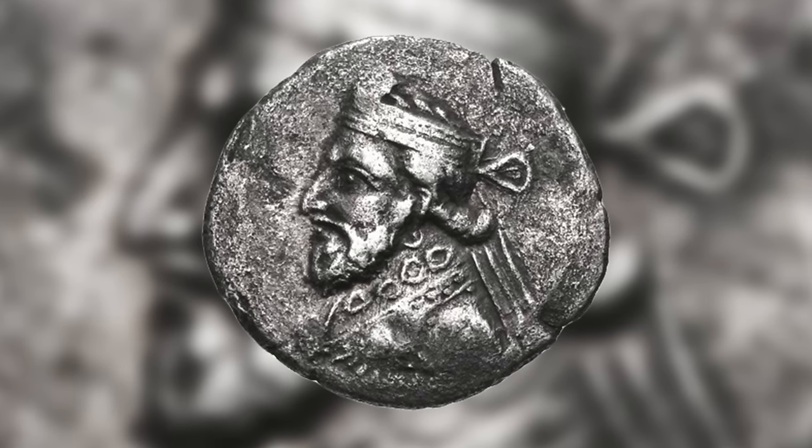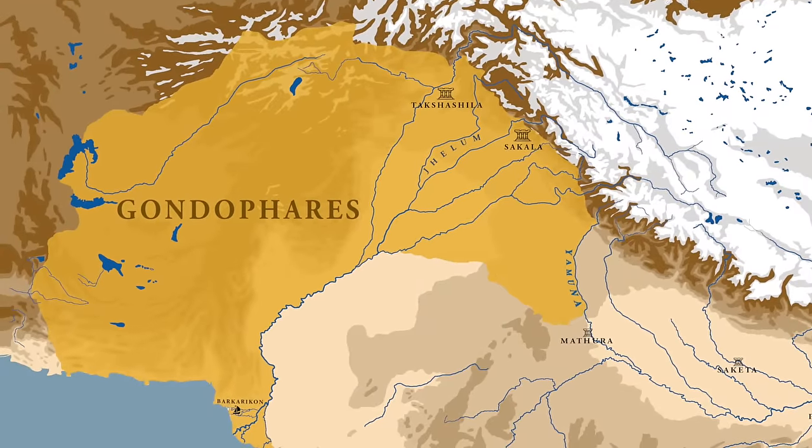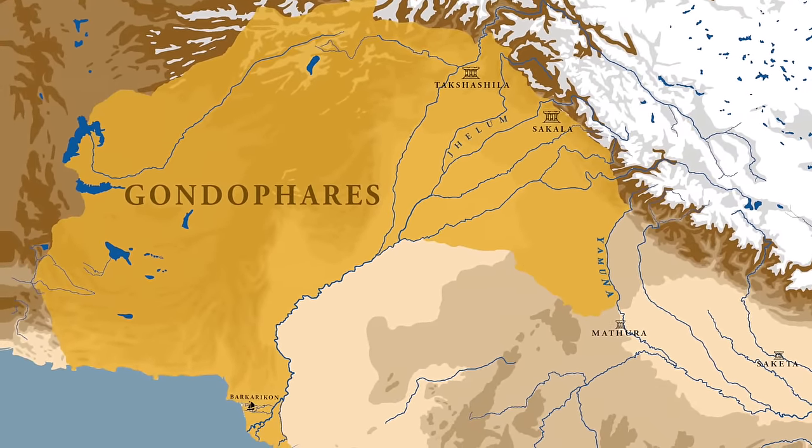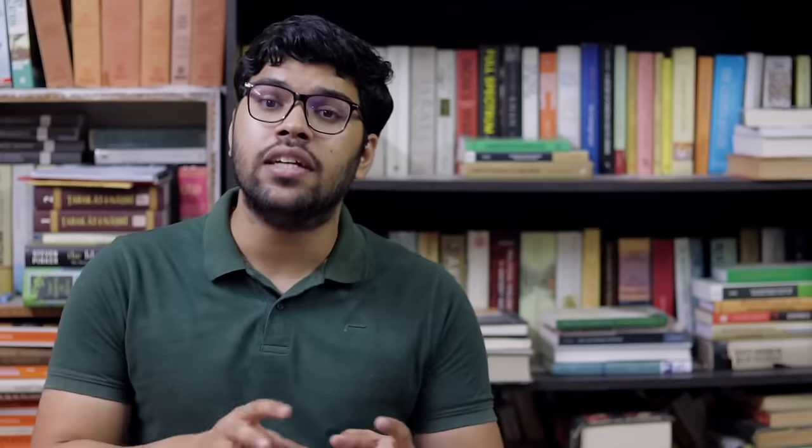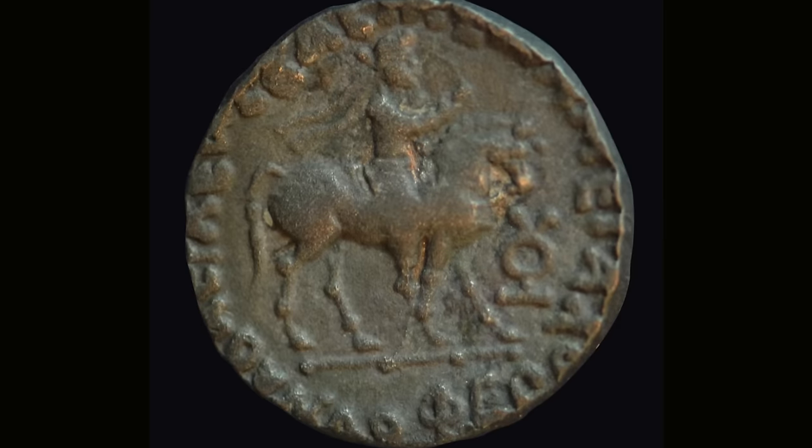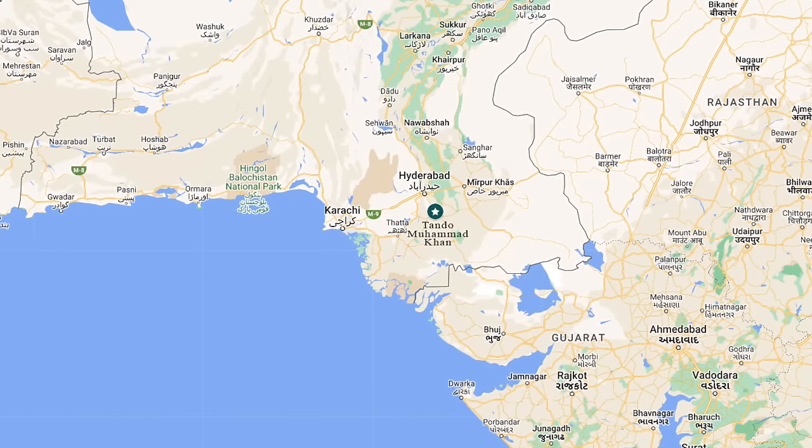The Periplus tells us that the region was in the hands of Parthians who were constantly fighting each other over it. This probably reflects the political instability following the death of the great Indo-Parthian ruler Gondopheris, who had established Indo-Parthian control over a large part of North India. After his death, the various Indo-Parthian princes fought over the throne. In Sindh, an Indo-Parthian ruler named Sepedenis probably ruled, as two silver coins attributed to him have been found at Tando-Mohambad Khan, about 180 km west of Karachi.